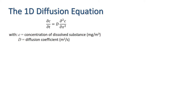We are going to derive two finite difference schemes to approximate this equation: an explicit scheme and an implicit scheme. Our independent variables are x and t, and thus we have a computational domain in the x-t plane.